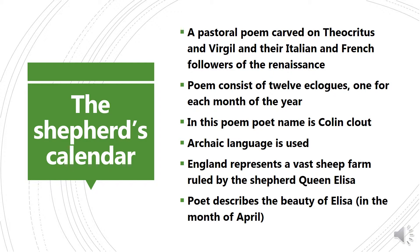In this poem, archaic language is used, and England is represented as a vast sheep farm ruled by a shepherd named Queen Eliza. The beauty of Queen Eliza is described by the poet in the month of April. This is an important question asked in every NET examination — in which month does the poet describe the beauty of Eliza? The answer is April. Learn that passage well, as it is easy but important.